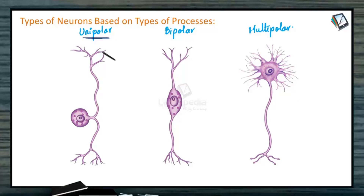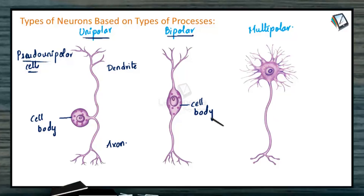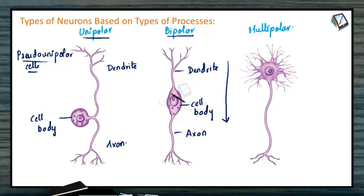In humans, the unipolar cells present are pseudo-unipolar cells, wherein the cell body produces a single process which divides into two different processes — one end acts as the dendrite and the other end acts as the axon. In the bipolar neuron, the cell body at one end forms the dendrite and the other end produces the axon, giving two cytoplasmic processes. Bipolar neurons are found in the retina of the eye, the sensory cells of the internal ear, and the olfactory sensory epithelium. In the multipolar type, there is one axon and more than one dendrite arising from the cell body, and most neurons in the body are multipolar.